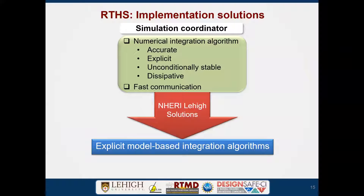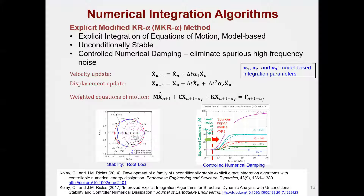We've developed explicit-based integration algorithms to meet these requirements. One is called the modified KR algorithm — KR being the initials of two people's last names; Chimori Kule worked on this for his dissertation. This allows you to integrate the equation of motion in an explicit sense. It's model-based, requiring only initial elastic properties — particularly stiffness should not be underestimated, though it's not overly sensitive. It has controlled numerical damping. Why is this important? You need to eliminate sparse high-frequency noise that occurs both in the lab and in numerical computations.